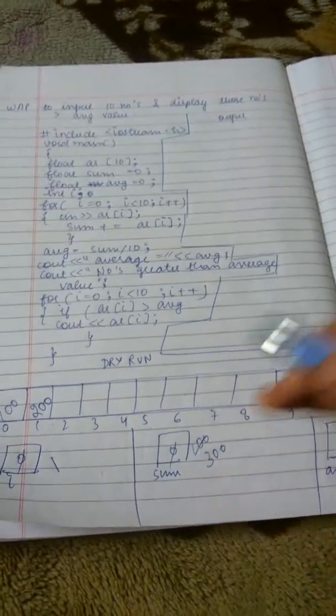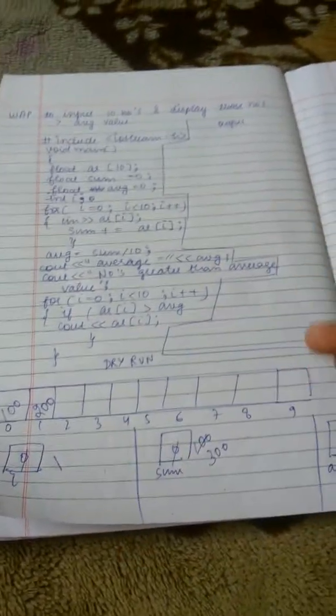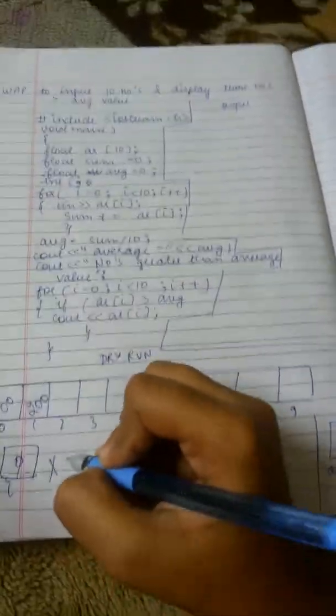Now like this only, the i will get incremented. We will input the value and the sum will get added. I will do this for you.